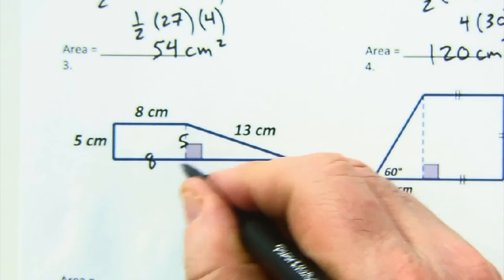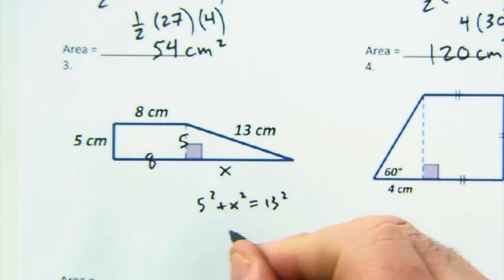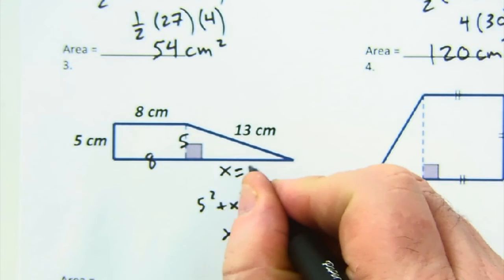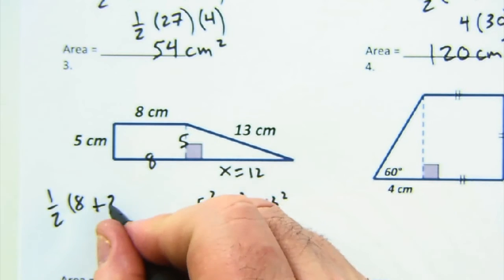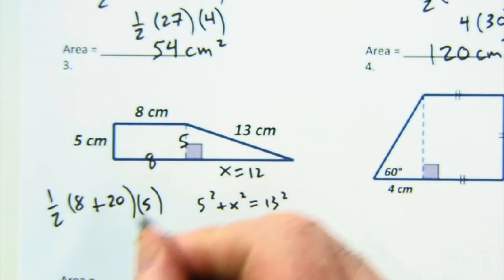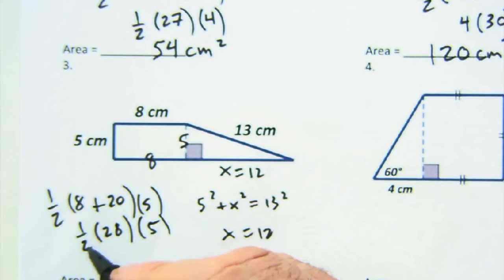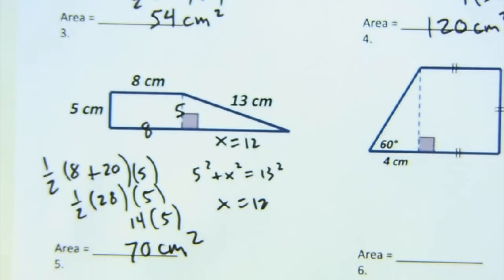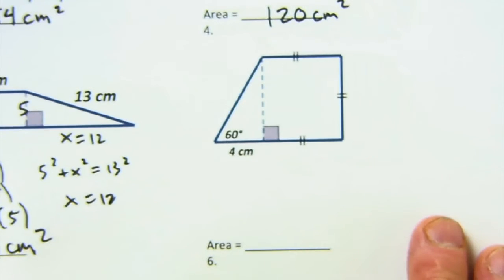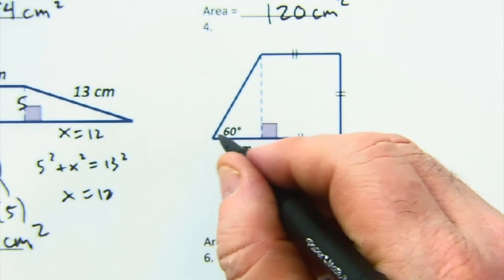For the next example, 8 is given and I'm missing a piece. I see a right triangle with legs 5 and hypotenuse 13 — using the Pythagorean theorem: 5² + x² = 13², so x = 12. Using the formula: one half times (b1 + b2) times h, with b1 = 8, b2 = 20, h = 5. That's one half times 28 times 5: half of 28 is 14, times 5 gives 70 cm².